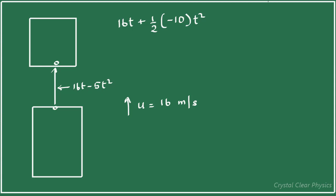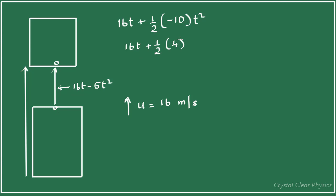During the same time, the floor of the elevator has moved up. That's given by 16t — the initial velocity of the elevator at the instant the bulb leaves the ceiling — plus half times the acceleration of the elevator, giving plus 2t². So this quantity is 16t plus 2t².